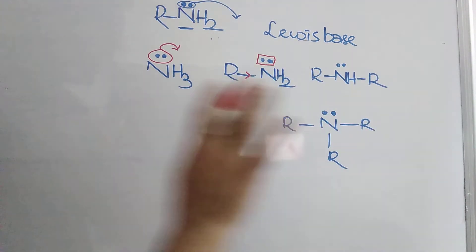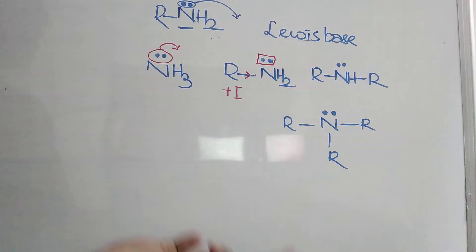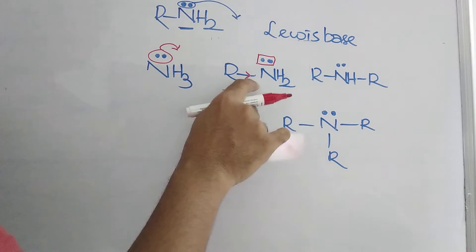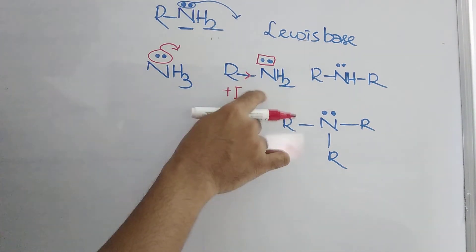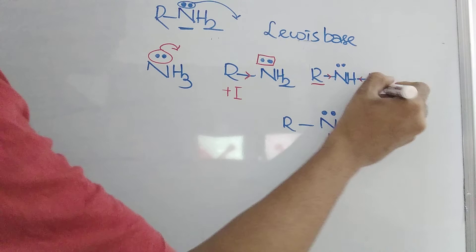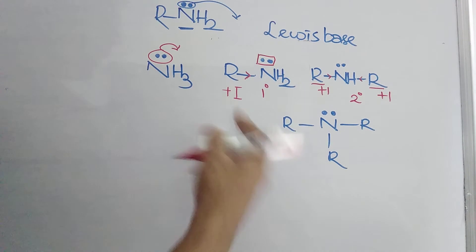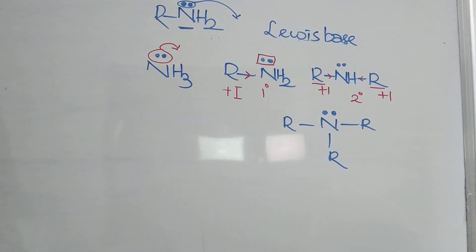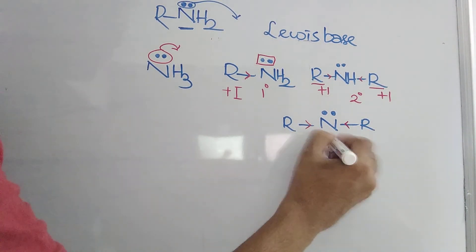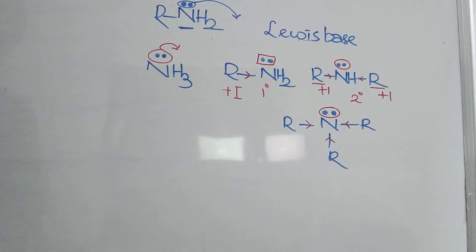In a primary amine, nitrogen can donate more easily because the alkyl group supports electrons toward nitrogen through the inductive effect — this is called the +I effect. The alkyl group gives electrons to nitrogen, so nitrogen can donate its electron pair easily. In a secondary amine, two alkyl groups are present, each exerting +I effect, making donation even easier than a primary amine.